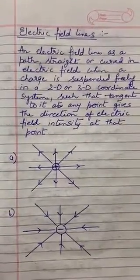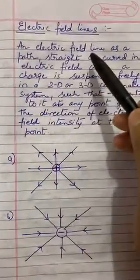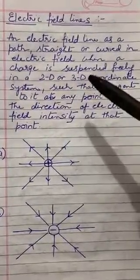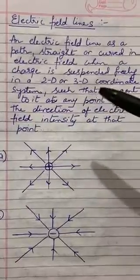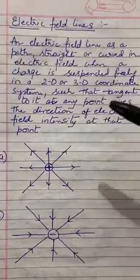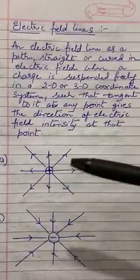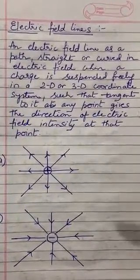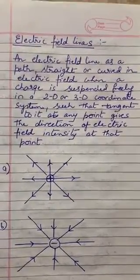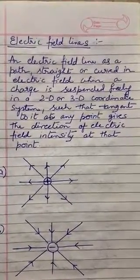The topic we are going to cover today is electric field lines. An electric field line is a path — straight or curved — in an electric field when a charge is suspended freely in a 2D or 3D coordinate system, such that the tangent to it at any point gives the direction of electric field intensity at that point. The trajectory followed by the charge will be called electric field lines, and the tangent drawn on it gives the direction of electric field intensity.